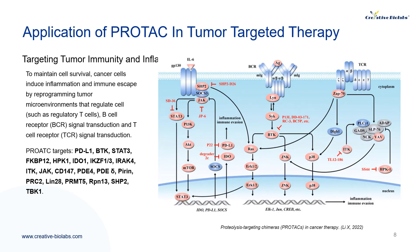In order to maintain cell survival, cancer cells induce inflammation and immune escape by reprogramming tumor microenvironments that regulate B-cell receptor signal transduction and T-cell receptor signal transduction. Immune checkpoint inhibitors are a new immunotherapy that can alleviate immunosuppression and achieve immune-mediated tumor clearance. However, some patients have congenital or acquired resistance to immunotherapy. PROTAC targeting immunity and inflammation provides a new strategy to overcome these problems.